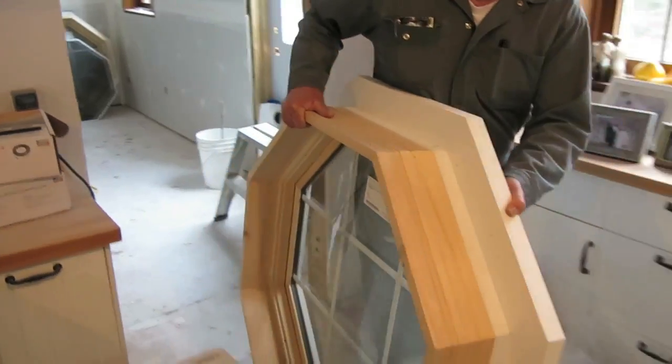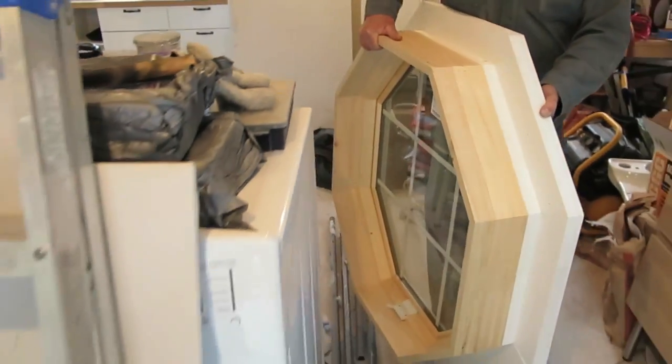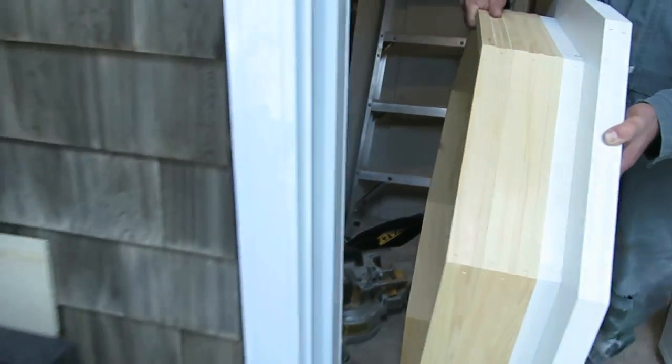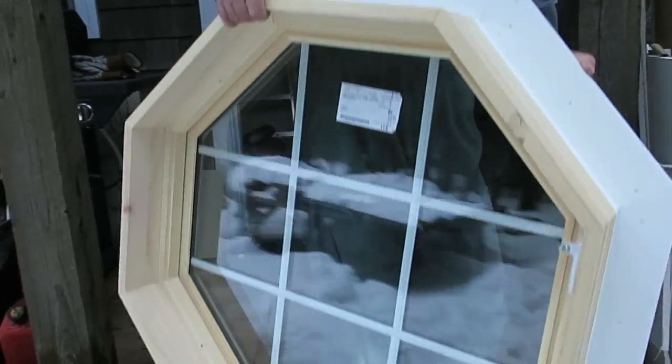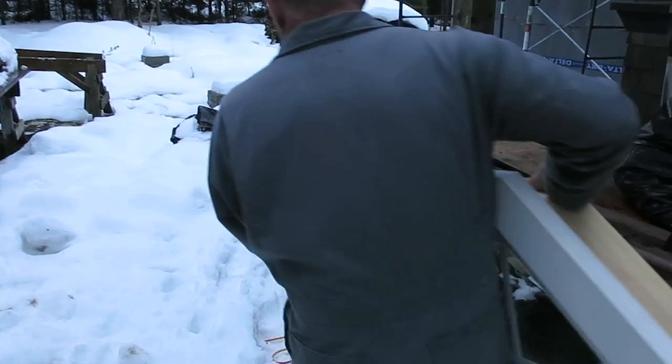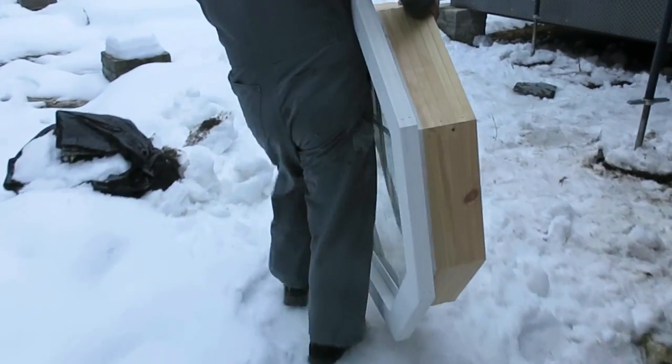So now it's time to get the windows in position, ready for installation. Like almost every other window, they need to be installed from the outside in a new construction situation because the trim is larger than the opening. We're going to be hoisting these up onto some scaffolding and putting them in from the outside after we do some preliminary work to protect the openings.